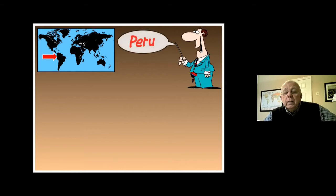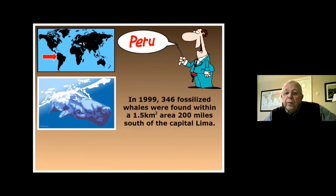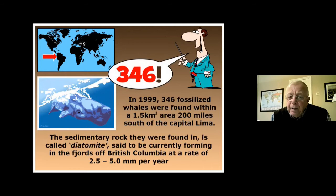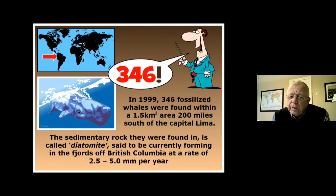Peru — in 1999, 346 fossilized whales were found within a one-and-a-half square kilometre area, 200 miles south of the capital Lima. This isn't one whale or even a dozen — it's 346 whales. The sedimentary rock they were found in is called diatomite, said to be currently forming in the fjords of British Columbia at a rate of 2.5 to 5 millimetres per year. How can you fossilize 346 whales with a sedimentary rock that, following uniformitarianism, forms at just 2.5 to 5 millimetres per year?